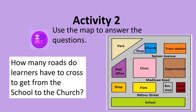Activity 2. Let's map some more. How many roads do learners have to cross to get from the school to the church? Can you see that they need to cross Lorville Street? Then they also need to cross Madikwe Road and they also have to cross Nelson Avenue. So learners have to cross three roads to get from the school to the church.